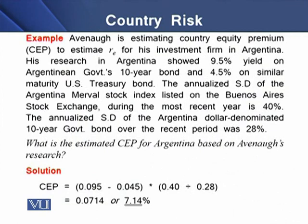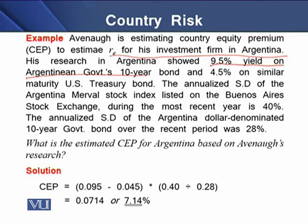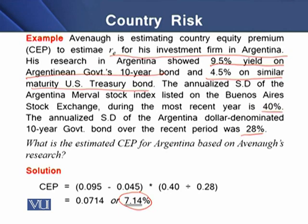As a worked example, Avinov is estimating the country equity premium to calculate RE for his investment firm in Argentina. His research showed a 9.5% yield on Argentinian government bonds and 4.5% on similar maturity US Treasury bonds. The annualized standard deviation of the Argentinian stock index (Buenos Aires Stock Exchange) over the most recent year is 40%, while the annualized standard deviation of the Argentinian dollar-denominated 10-year government bond is 28%. Plugging these values into the model gives a country equity risk premium of 7.14%.